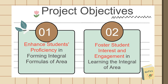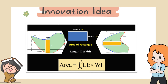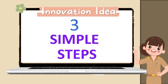Traditionally, integrating the area between curves has been a challenging task for students. The Length Times Width Technique simplifies this process by relating it to the straightforward notion of calculating the area of a rectangle — that is, the product of length and width. This technique introduces a systematic approach that involves identifying the upper and lower curves, establishing the limits of integration, and determining the appropriate integrands, with only these three simple steps.